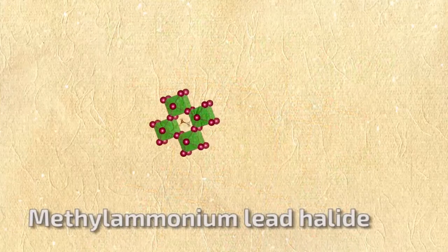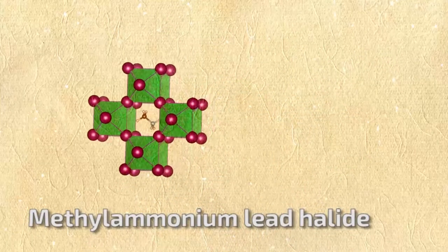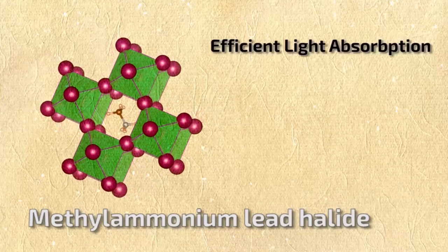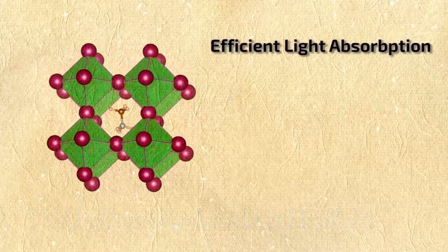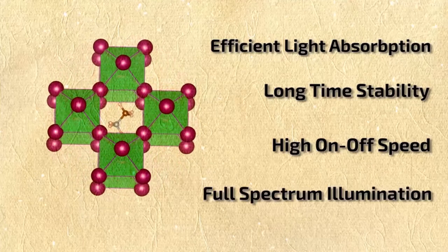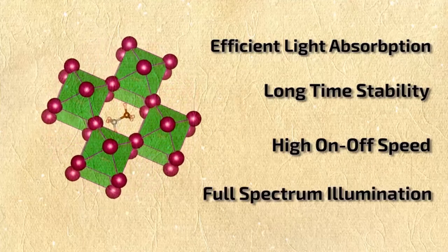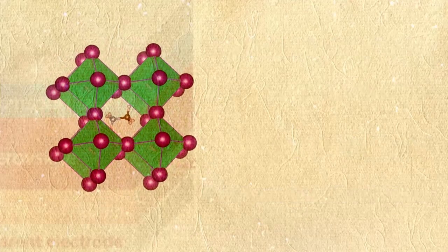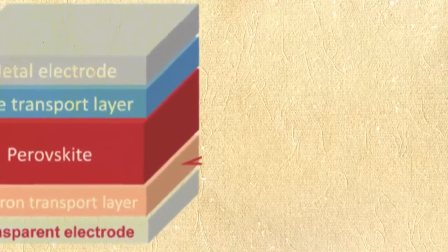Methyl ammonium lead halide Perovskites are the most popular ones in the solar cell industry because of their light absorbing property, long time stability, high on-off speed, and broad spectrum response from ultraviolet to visible light.